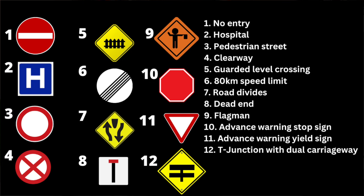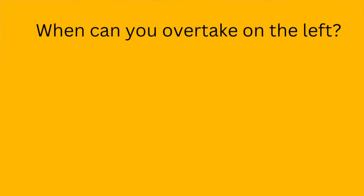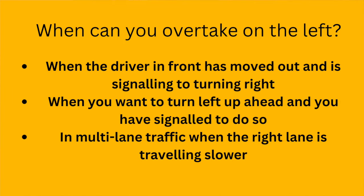Number twelve is a T-junction ahead with a dual carriageway. Now let's move on to some of the more common theory questions you could be asked. When can you overtake on the left? You can overtake on the left when the driver in front has moved out and is signalling to turn right. You can also overtake on the left when you want to turn left up ahead and have indicated to do so, and in multi-lane traffic when the right lane is moving slower than the left lane.